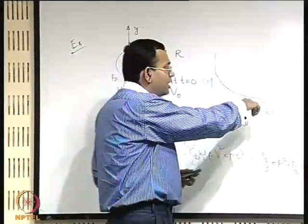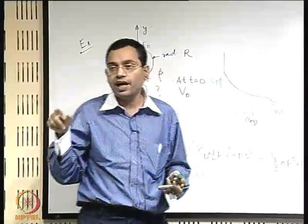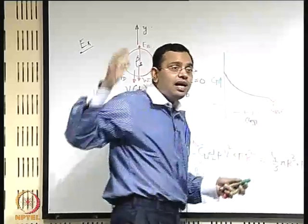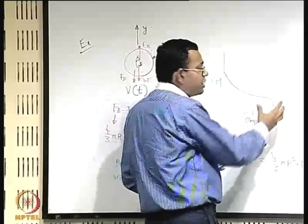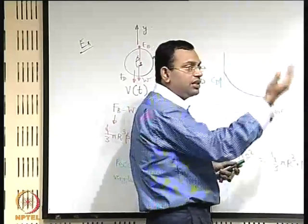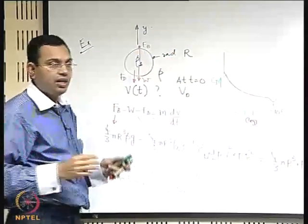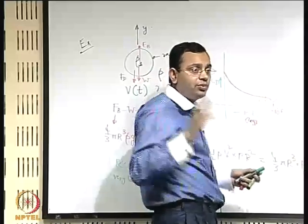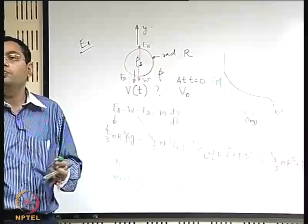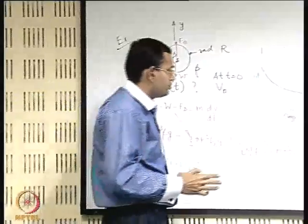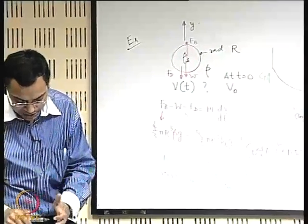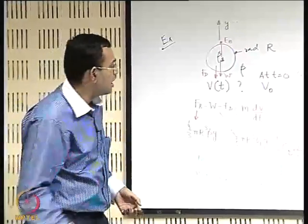This CD behavior — dominated by boundary layer separation — is also seen for flow past circular cylinders. We will now look at animated visualizations of flow past circular cylinders to understand what happens physically at different Reynolds numbers.